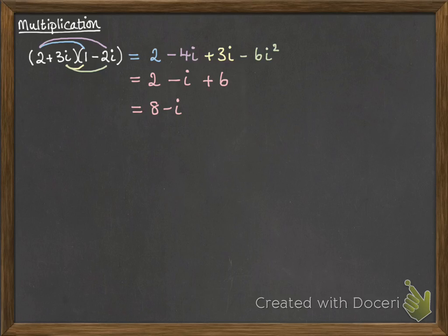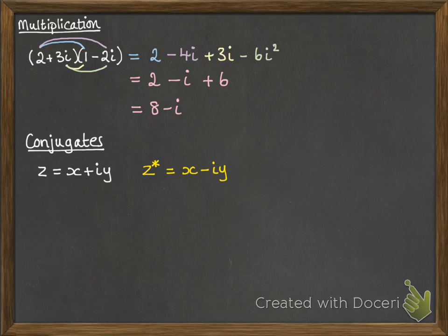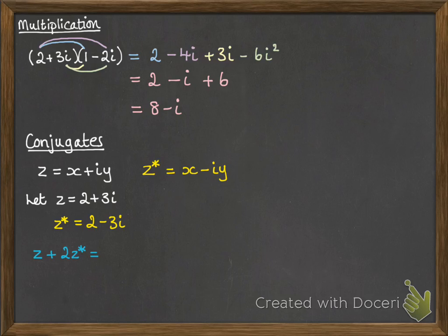We can also do division of complex numbers, but that's a little more tricky — we're going to look at that in the next video. The next thing to look at here is conjugates. If z equals x plus iy, the conjugate is denoted by z star and it's x minus iy, so the imaginary part just gets its sign reversed. For example, if z is 2 plus 3i, then z star would be 2 minus 3i. And you can do things like z plus 2 times the conjugate of z and perform your normal arithmetic on it.